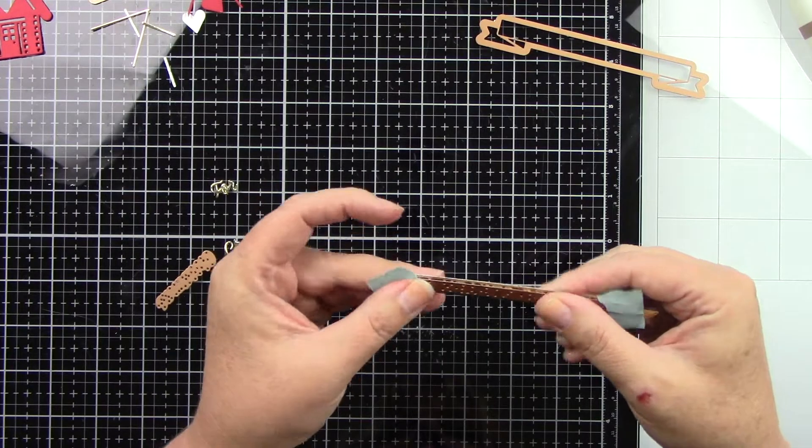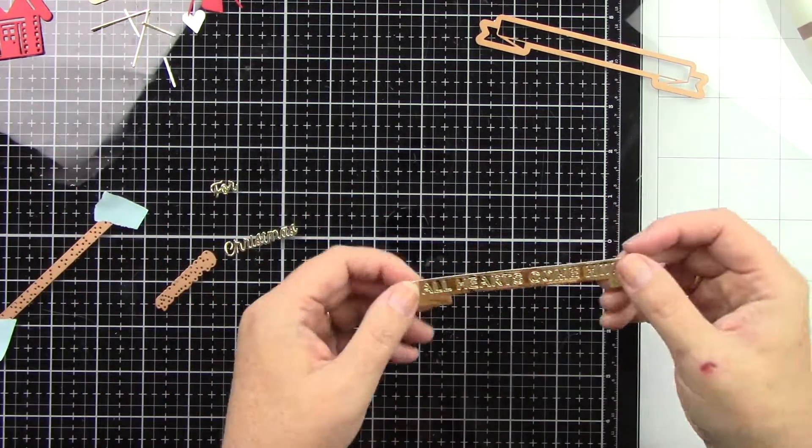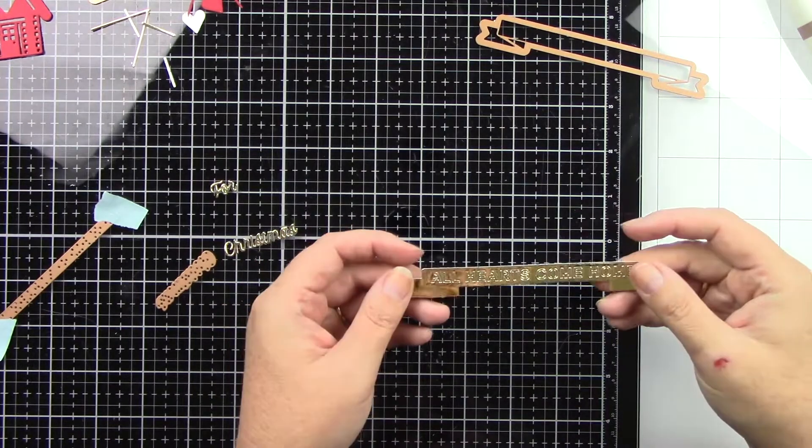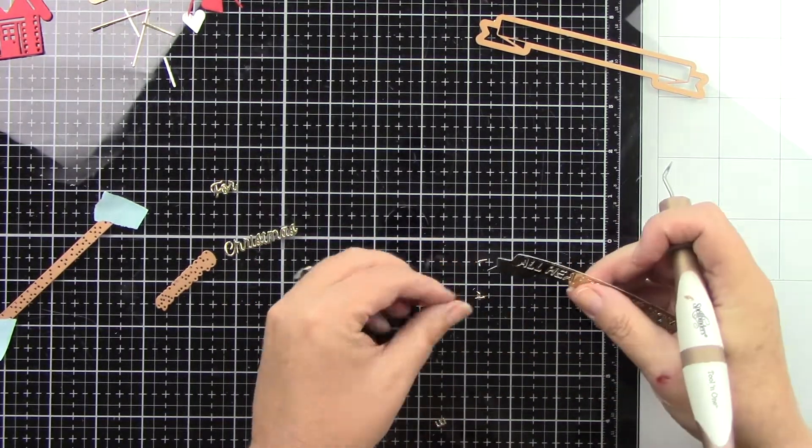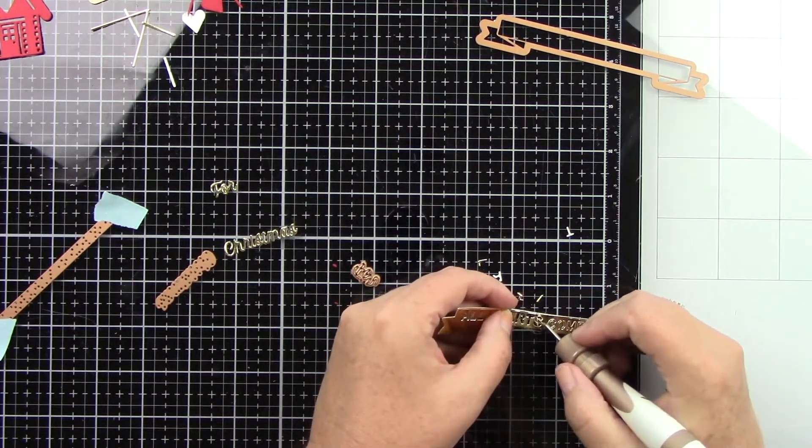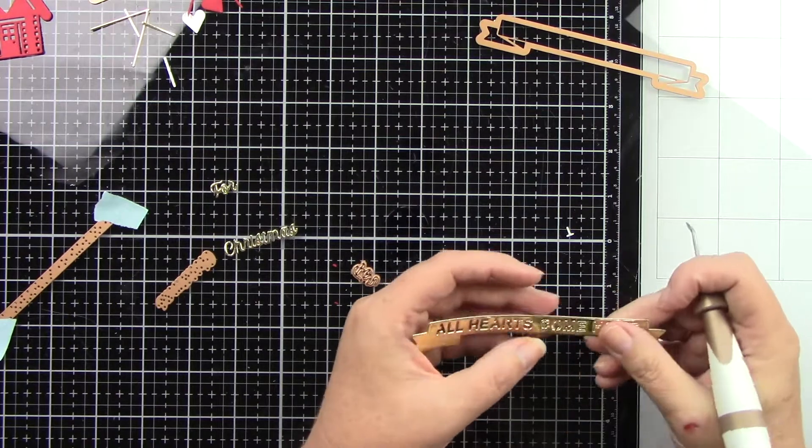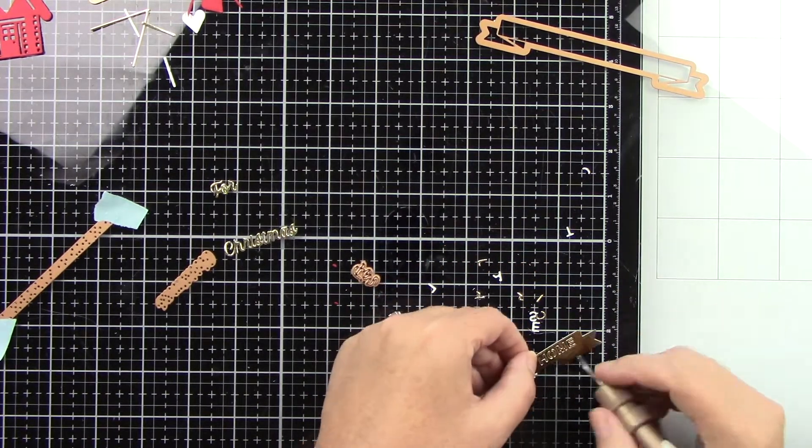So on that little sentiment strip, I'm going to add the piece that says all hearts come home. I'm just going to use my tool to pop those little pieces out. And I also die cut a piece of white cardstock that I totally forgot to show on here. So I apologize for that.